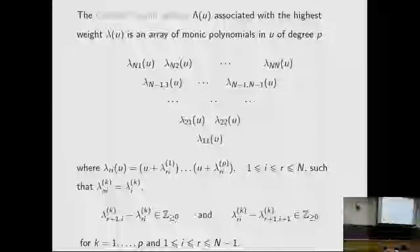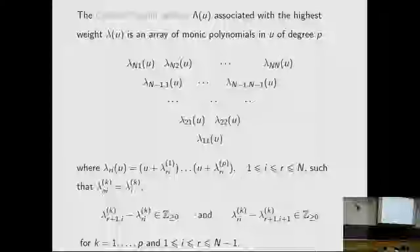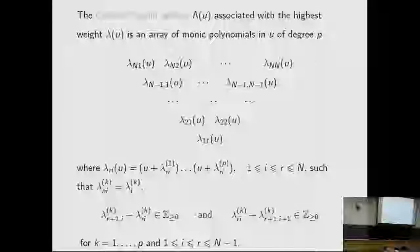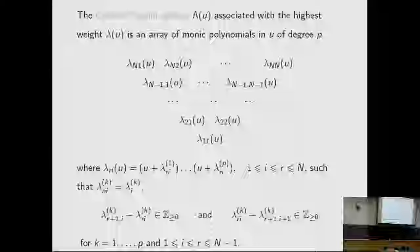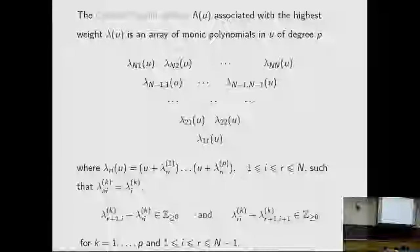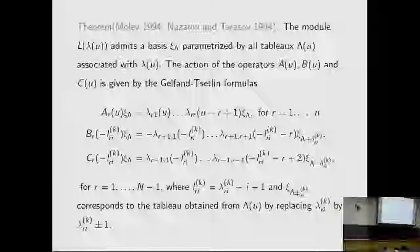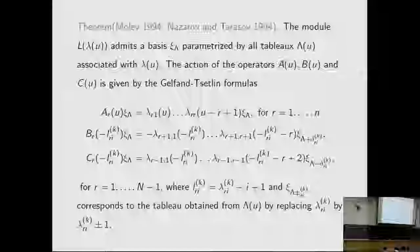Lambda_i(u) can be written in this explicit form. The top row of lambda is lambda_{ik}. This lambda satisfies the following betweenness conditions. Molev, Nazarov, and Tarasov independently proved the following theorem.